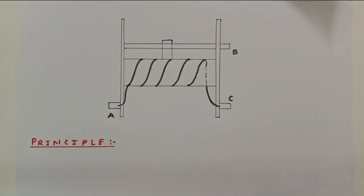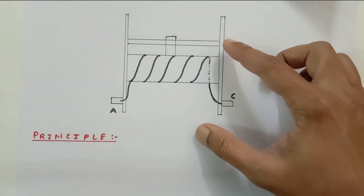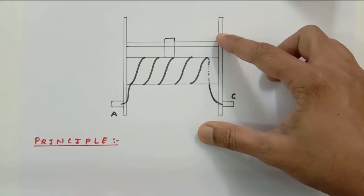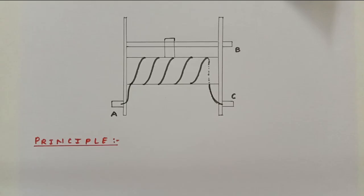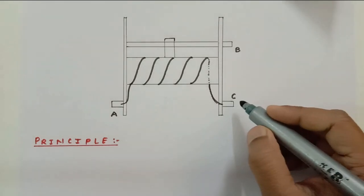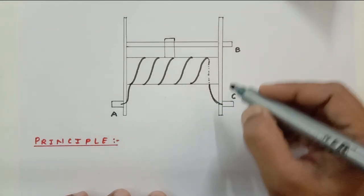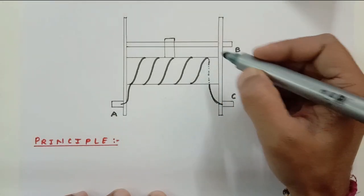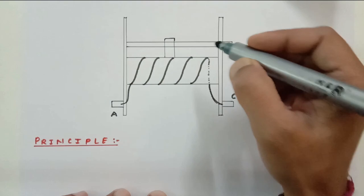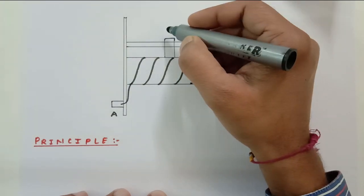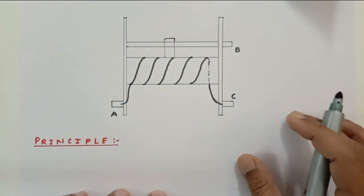Here is the figure that represents the rheostat. These two are the fixed terminals, and this one is the movable terminal — this is the joki, or you may call it the wiper or sliding contact.